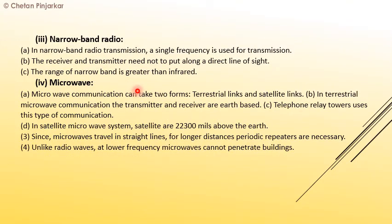Next is narrow band radio. In narrow band radio transmission, a single frequency is used for transmission. The receiver and transmitter need not be placed along a direct line. The range of narrow band radio is more than that of infrared.